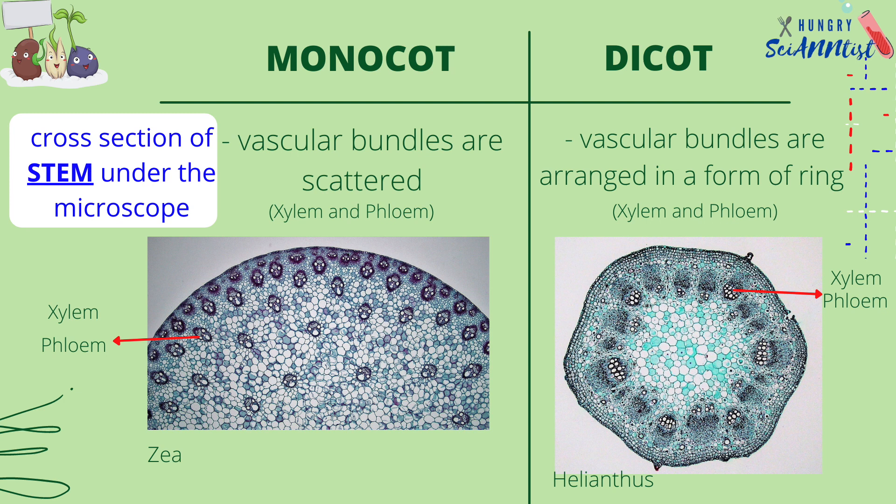Vascular bundles in a monocot stem are scattered, while a dicot stem has vascular bundles arranged in the form of a ring.